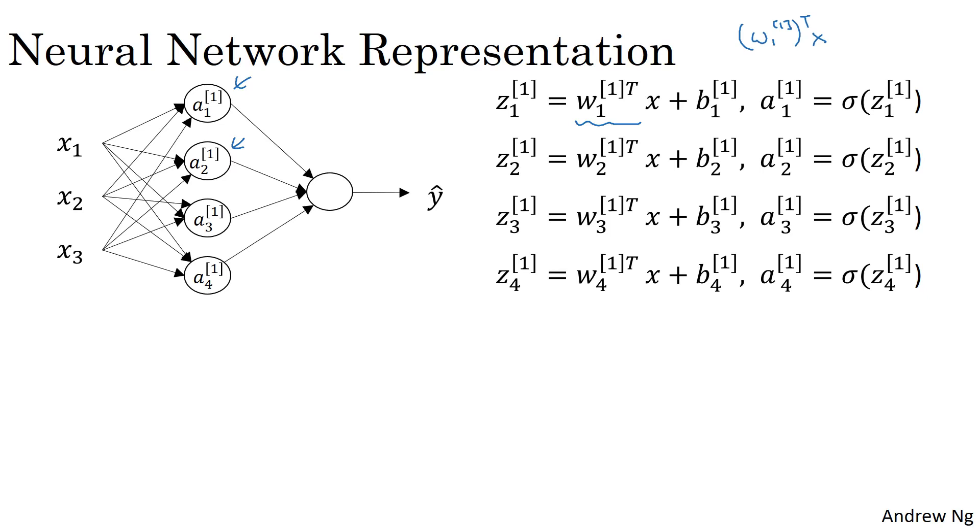Now, as you might have guessed, if you're actually implementing a neural network, doing this with a for loop seems really inefficient. So what we're going to do is take these four equations and vectorize. So we're going to start by showing how to compute z as a vector. And it turns out you could do it as follows.